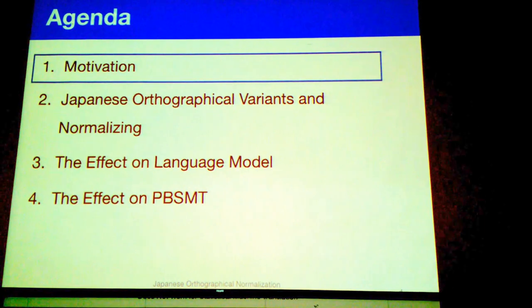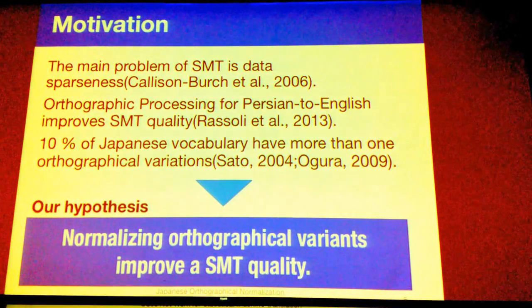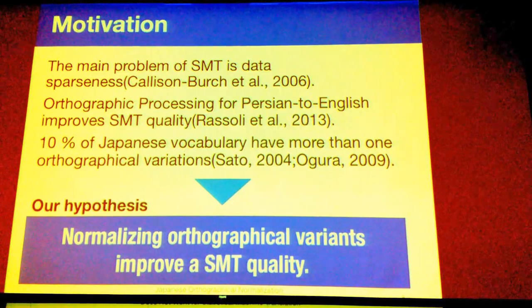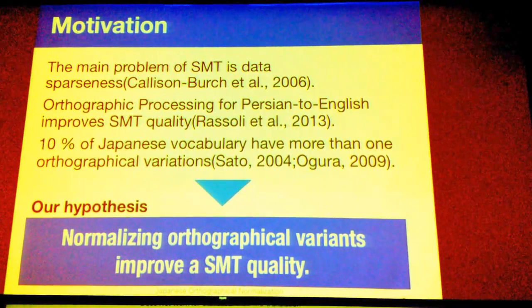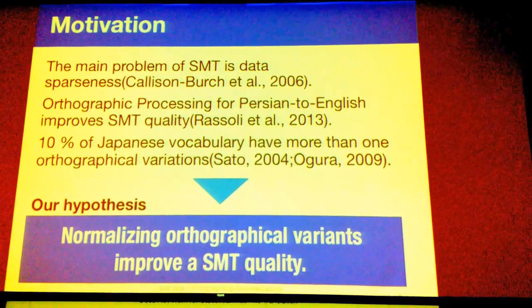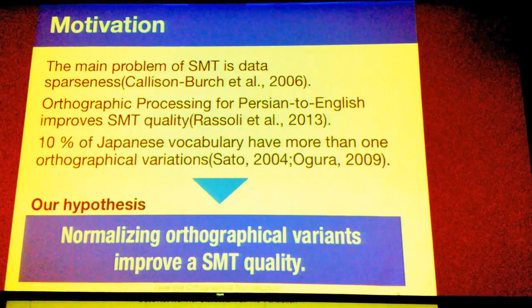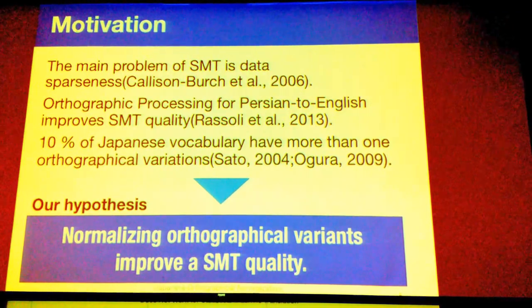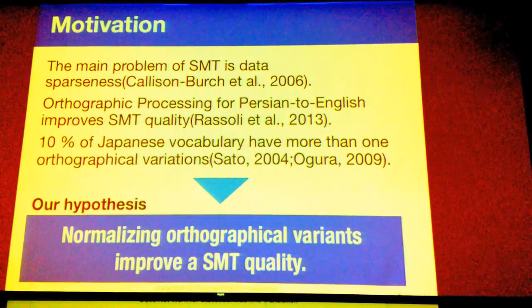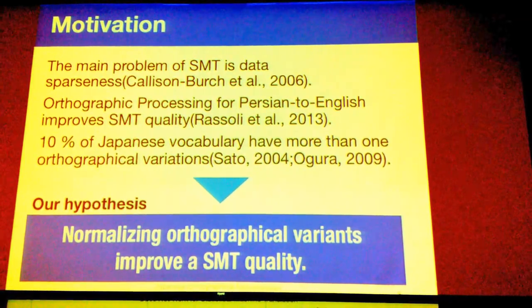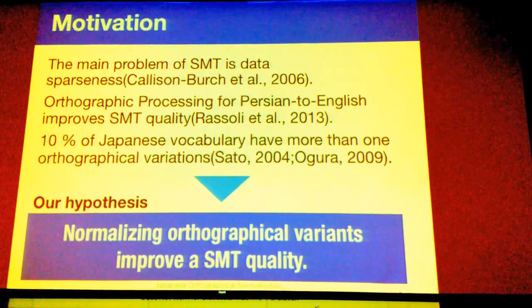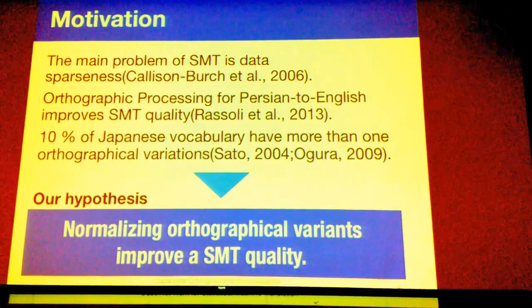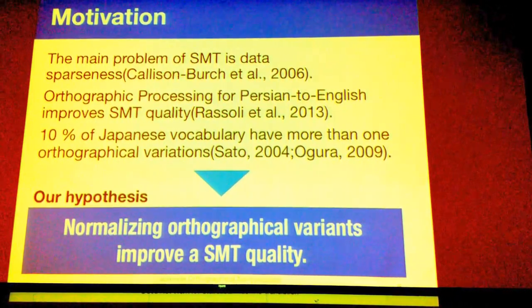Let me explain our motivation. The main problem of SMT is the data sparseness problem. Research shows that half of the trigrams in test data do not exist in training data. Also, research on orthographic processing for Persian to English shows it improves SMT quality. And Sato and Ogura show that 10% of Japanese vocabulary have more than one orthographical variation in a corpus. From these related works, we hypothesize that normalizing orthographical variance improves SMT quality.